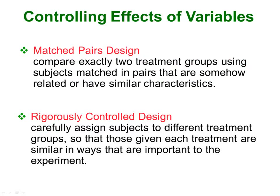Matched paired design is where you have two groups matched on some sort of similar characteristics — for example, working with twins and putting half of each twin pair in one group and half in the other. A rigorously controlled design is exactly what it sounds like: making sure that subjects are getting different treatments under carefully controlled conditions.